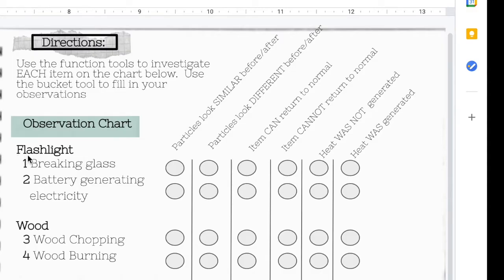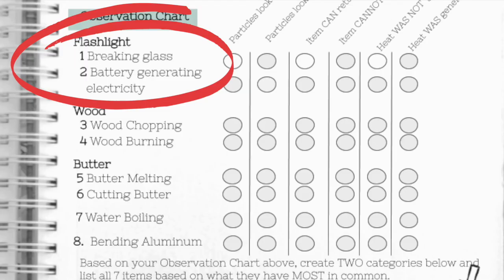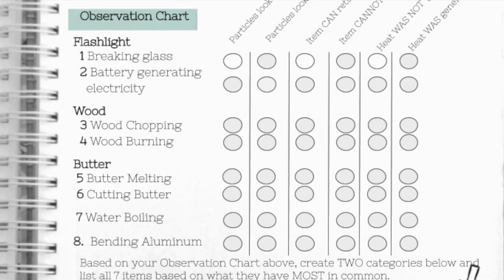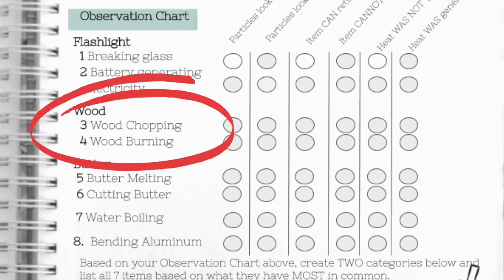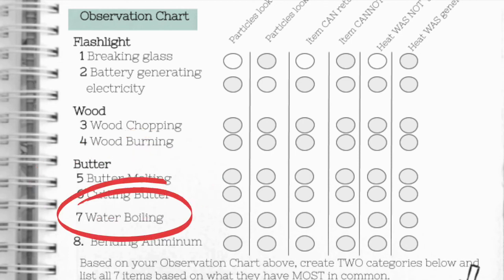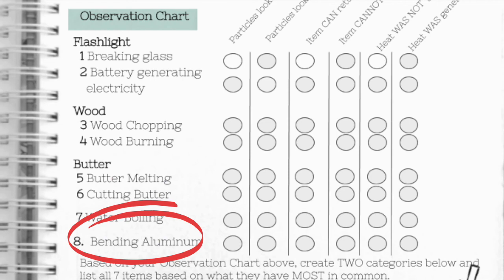Continue exploring the flashlight's breaking glass to decide if the item can or cannot return to normal and whether or not heat was generated. For the flashlight you're going to investigate both the breaking glass and the battery generating electricity. For the wood you're going to explore wood being chopped and wood being burnt. When you click the item selector for butter you're going to explore both butter melting as well as someone cutting the butter, and when you click the item selector on the pot you're going to take a look at water boiling. The last item you're going to investigate is bending aluminum.